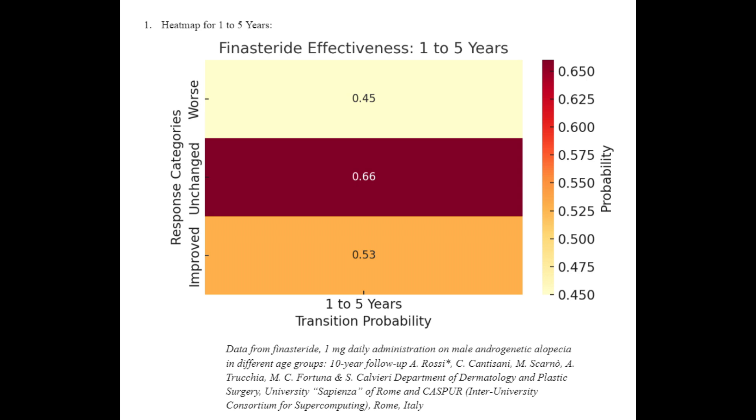The first heat map we're going to be looking at is the heat map for 1 to 5 years of finasteride treatment. This heat map shows the likelihood of a patient's condition in the first year of treatment changing or staying the same by the fifth year.